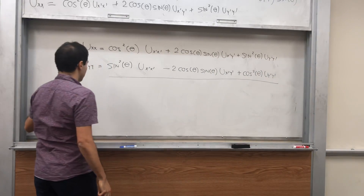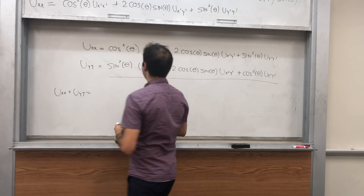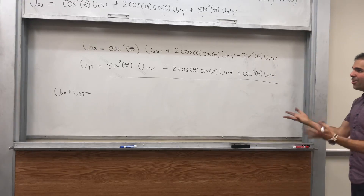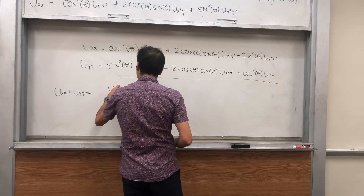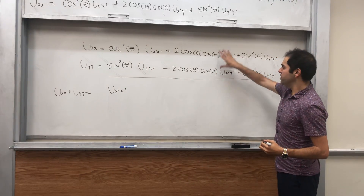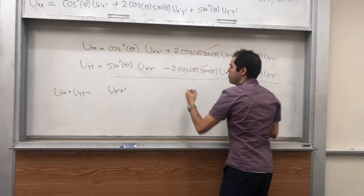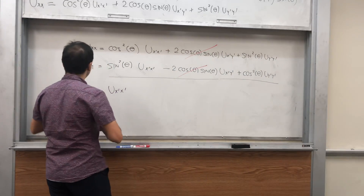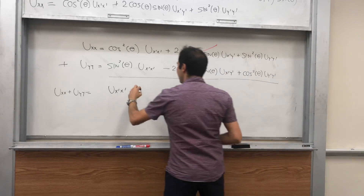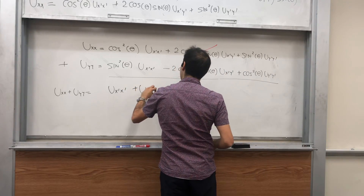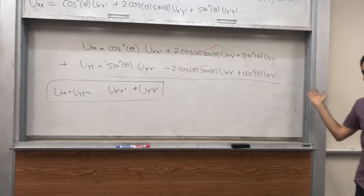Here's the thing: if you add both of those up, u_xx plus u_yy, you get cosine squared plus sine squared — which is 1 — times u_x'x', the cross terms cancel out, and sine squared plus cosine squared — which is 1 — times u_y'y'. Ta-da!